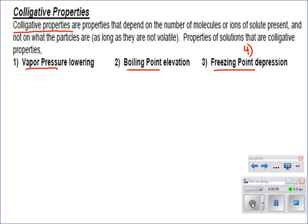There's a fourth one that we're not going to actually do calculations with, but I want you to know it in case — it's osmotic pressure. For those of you who take AP Bio, you're going to actually do some labs and do some osmotic pressure calculations, but we don't deal with it in AP Chem. There is an osmotic pressure equation on the AP equation sheet, but it's traditionally not tested on the AP.